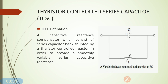Now, what is a Thyristor Controlled Series Capacitor? Basically, a Thyristor Controlled Series Capacitor is a capacitive reactance compensator which consists of a series capacitor bank shunted by a Thyristor Controlled Reactor to provide a smoothly variable series capacitive reactance. So basically it is a fixed capacitor connected in parallel with a Thyristor Controlled Reactor.